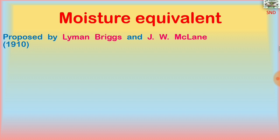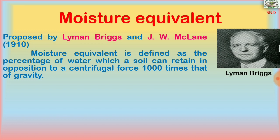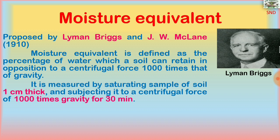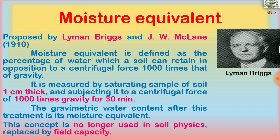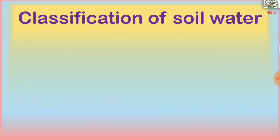The moisture equivalent term, proposed by Lehman Briggs and J.W. McLean, is no longer in use. It was defined as the percentage of water which a soil can retain in opposition to a centrifugal force 1000 times that of gravity. It is measured by saturating a soil sample one centimeter thick and subjecting it to 1000 times gravity for 30 minutes. It has been replaced by field capacity in soil physics.